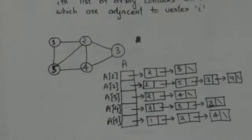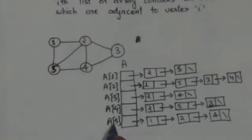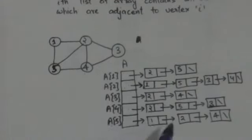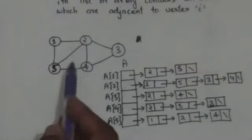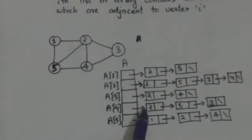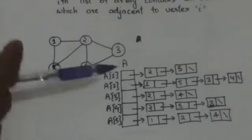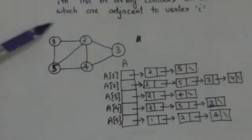Now see vertex 5 of this graph. Vertices 1, 2, and 4 are adjacent to vertex 5. So A5, that is the fifth element of array A, represents the linked list of vertices adjacent to vertex 5. This linked list contains the vertices 1, 2, and 4. This was the adjacency list representation of an undirected graph.